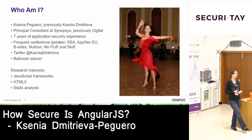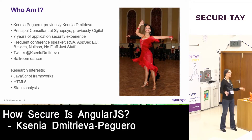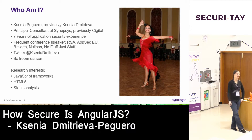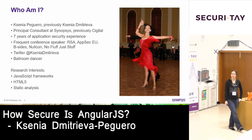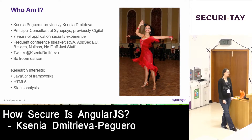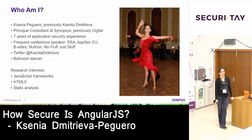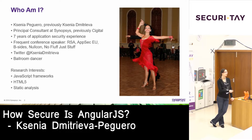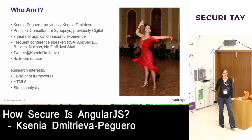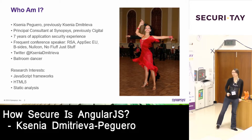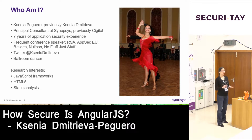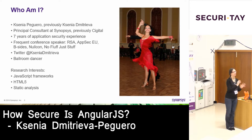Before that I was a developer in a technology called Flash that existed seven years ago — it kind of still exists but not really. I was a Java developer before that. I do speak at conferences quite often, at security conferences such as RSA, AppSec EU. I've spoken at besides London a few years ago and some other American conferences. You can follow me on Twitter at Ksenia Dmitryva — it's my professional account, no pictures of food. In my real life I do ballroom dancing. That's my passion and love.